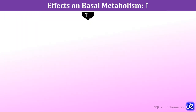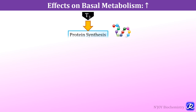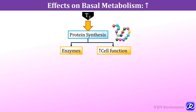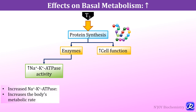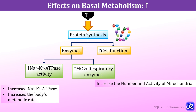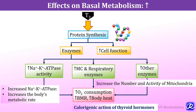Thyroid hormones increase the basal metabolism in almost all cells of the body. T3 increases protein synthesis and in turn increases synthesis of various enzymes and overall cell function. There is increase in sodium-potassium ATPase activity which increases the body's metabolic rate. There is also increase in the number and activity of mitochondria, leading to increased oxygen consumption, increased BMR and increased body heat — this explains the calorogenic action of thyroid hormones.